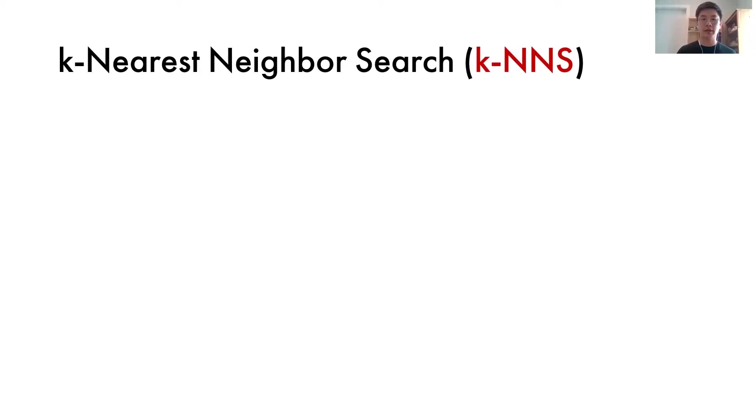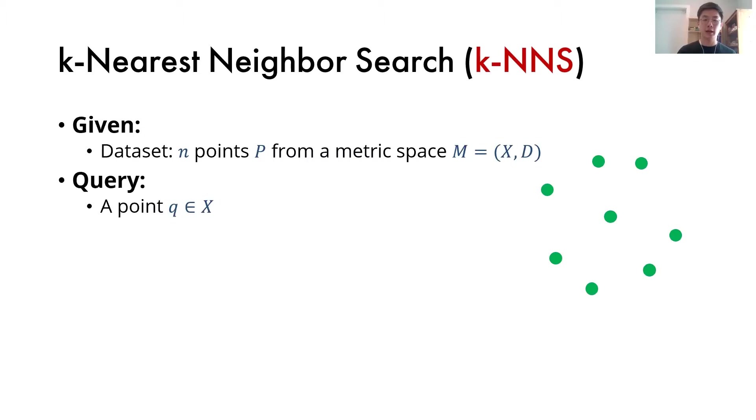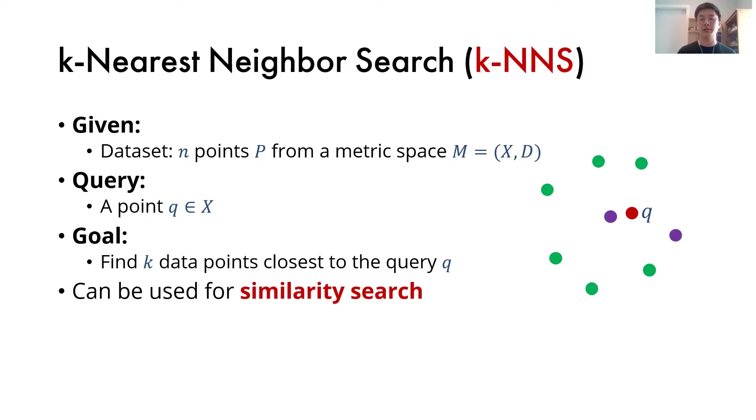Next, we introduce the k-nearest neighbor search problem, or k-NNS. The setup of this problem involves a dataset of endpoints from a metric space, and the query will be a point from the same space. The goal is to retrieve the k data points that are closest to the query. This can be used in applications such as similarity search for text-based documents.